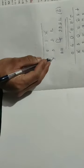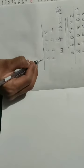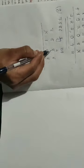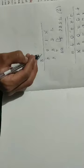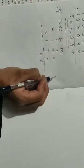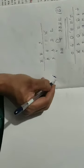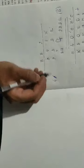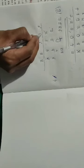Starting from the back digit, which is 8. 8 sixes are 48, write 8 carry over 4. 8 eights are 64, plus 4 is 68, carry over 6. 8 fives are 40, plus 6 is 46, carry over 4. 8 sevens are 56, plus 4 is 60. So we have finished multiplying with 8.